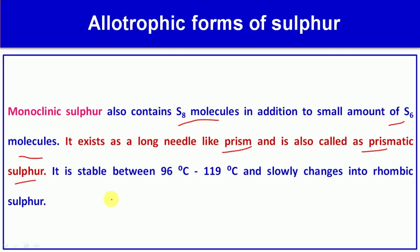From an exam point of view, if asked what prismatic sulfur is, the answer is monoclinic sulfur. Monoclinic sulfur is stable between 96°C and 190°C and slowly changes into rhombic sulfur when temperature decreases.